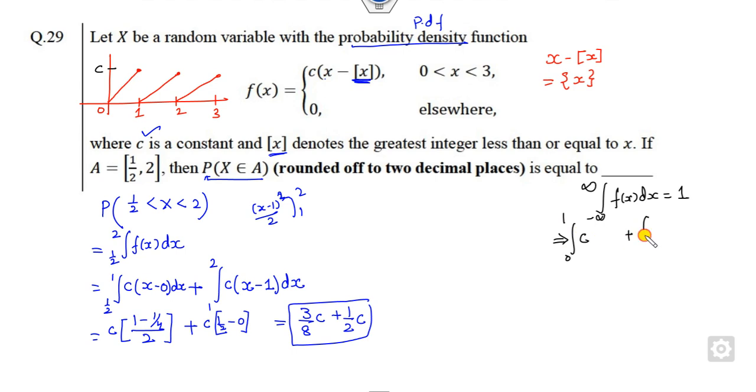From 0 to 1 plus 1 to 2 plus 2 to 3. What is the value of the greatest integer from 0 to 1? That is my 0. What is the greatest integer from 1 to 2? Is 1. Greatest integer from 2 to 3 is here, and then you can solve. You will get the value of C.